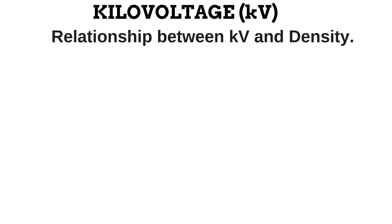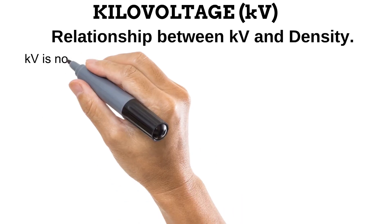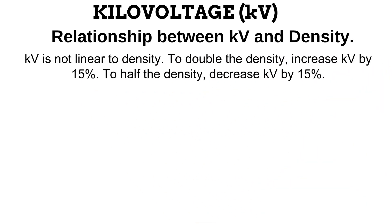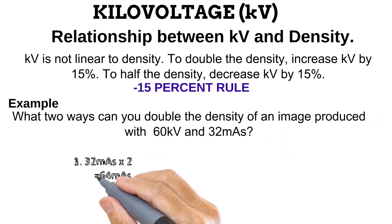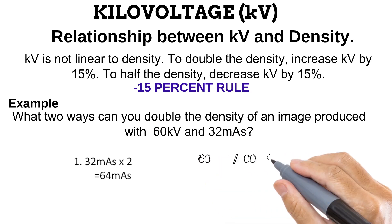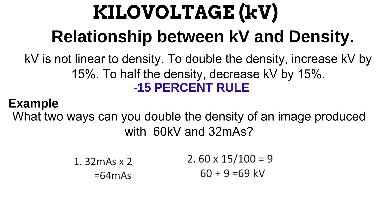Unlike MAS, the KV is not linear to the density produced. To double the density, the KV is increased by 15%; to halve the density, the KV is decreased by 15%. This is known as the 15% rule. For example, to double the density of an image produced with 60 KV and 32 MAS, you could either double the MAS to 64 MAS, or apply the 15% rule: 60 multiplied by 15% gives 9, so adding 9 to 60 KV doubles the density. Note that it is often preferred to change density by changing the MAS, because changes in KV also affect radiographic contrast.